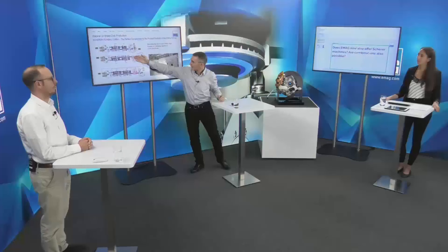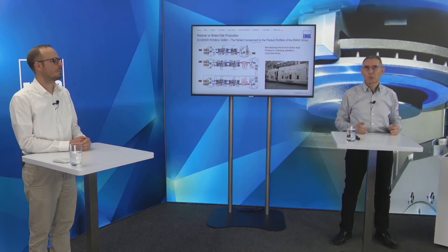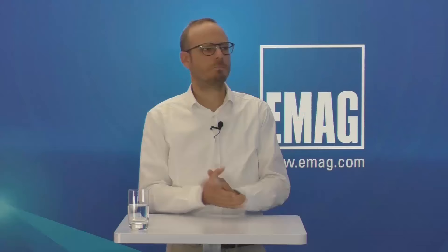Here is a solution from Schaerer directly — a line producing truck brake discs and truck friction rings for truck brakes: three lines together with a robot cell at the beginning and end, three operations, 45 seconds cycle time with a balancing machine included. With this machine type now in the group, we can support you in all sizes and all kinds of brake discs, as well as brake drums, and even railway braking solutions. As Schaerer is now part of the EMAC group, we select the best machine — Schaerer or EMAC — for each customer's workpiece needs.